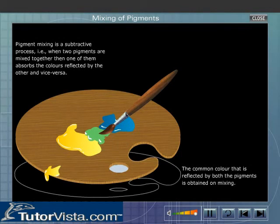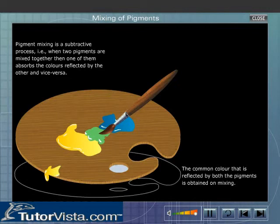Thus, yellow and blue pigments on mixing give green colour. Pigment mixing is a subtractive process — when two pigments are mixed together, one of them absorbs the colours reflected by the other and vice versa, and both reflect the common colour, green in this case. The green obtained is dull green, because the amount of green in the original pigments is very small. Hence, artists resort to pigment mixing only when they need to give some special effect.